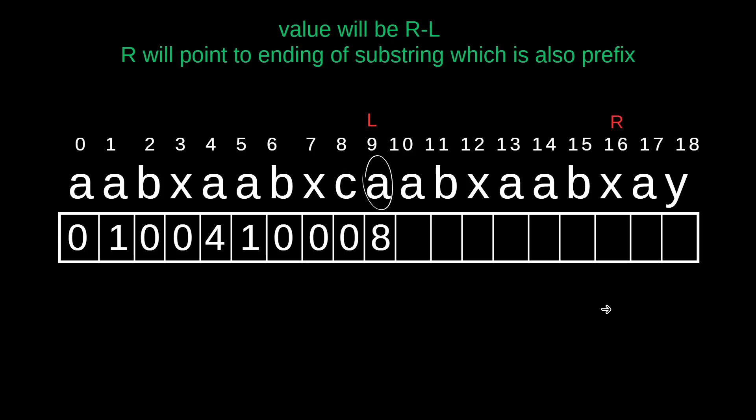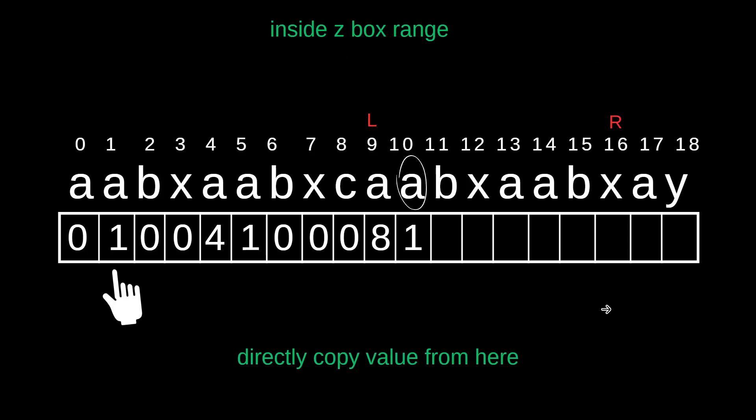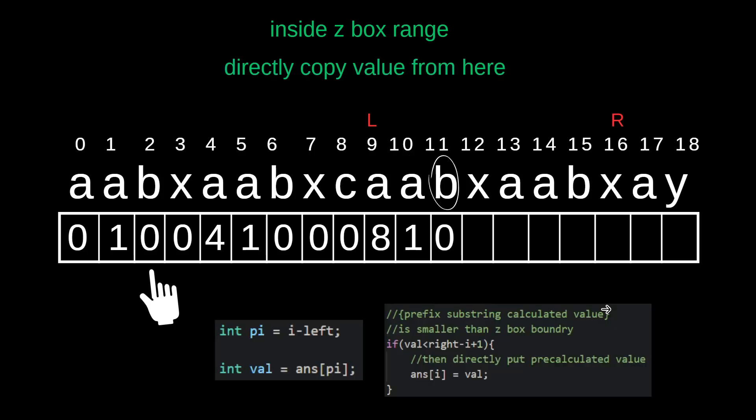It represents the range of the prefix which is also equal to the suffix. Then we go to this value — directly copy the value from here, because this is inside the Z box or Z boundary. So directly copy the value from the prefix. This is the code — directly copy the value. This particular if block...